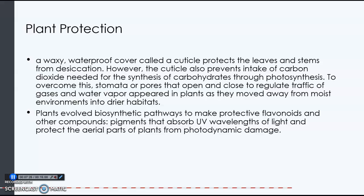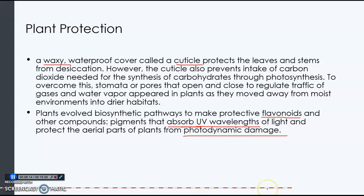Many parts of the plant are protected by a waxy coating called a cuticle. Plants can also protect themselves from predators by producing toxins. Additionally, plants can protect themselves from ultraviolet radiation — even though plants absorb UV radiation and need it, they can also be damaged by it. Flavonoids and other compounds can protect the plant from photodynamic damage, in other words from ultraviolet radiation.